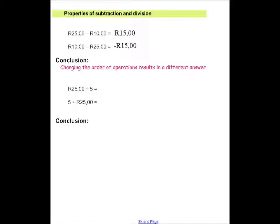If I look at division, 25 rand divided by 5 will give me 5 rand. If I have 5 rand divided by 25 rand, my result is 20 cents. So once again, you can see my answers here are not the same, although my numbers I've used are the same. But changing the order of operations will result in a different answer.